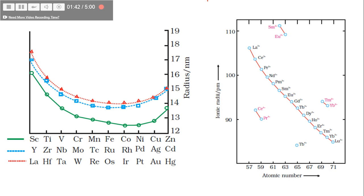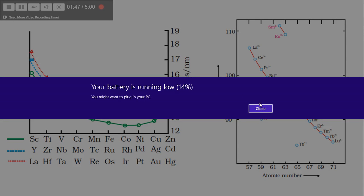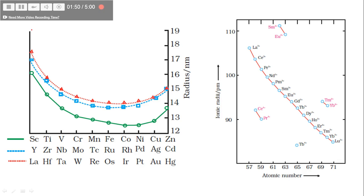But in case of lanthanoids or actinoids, this trend observed in transition elements is not observed. The size does not increase—it sharply keeps on decreasing. This is because in lanthanoids it's 4f electrons, and in actinoids it's 5f electrons which are present.